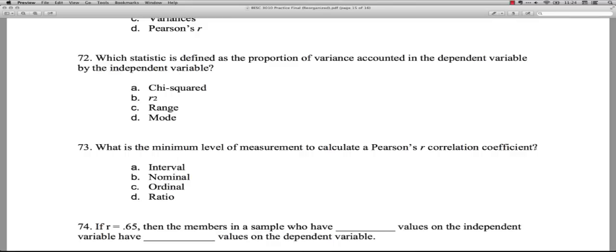C, the range. That's just how far things vary on one variable. That has nothing to do with this. And the mode, that's just, again, that's a univariate statistic. So C and D are just totally irrelevant.